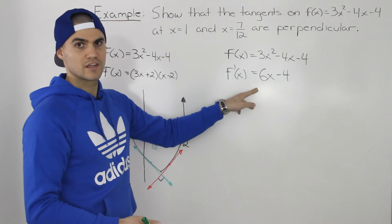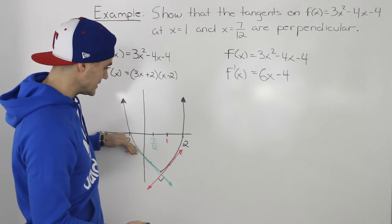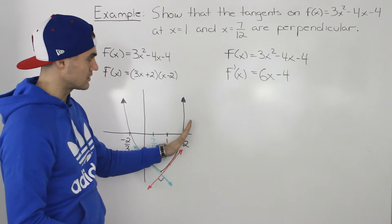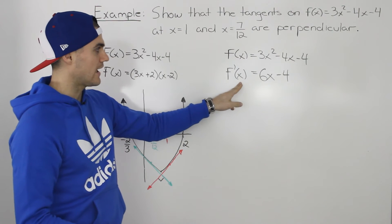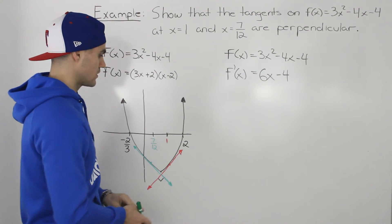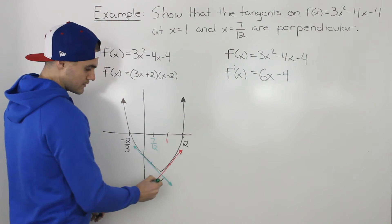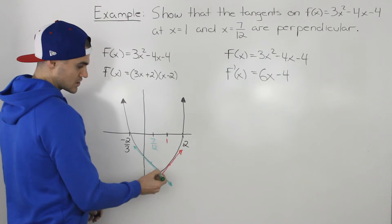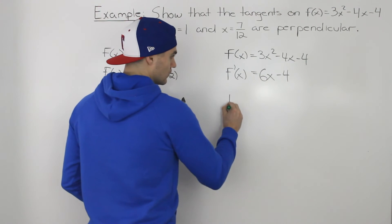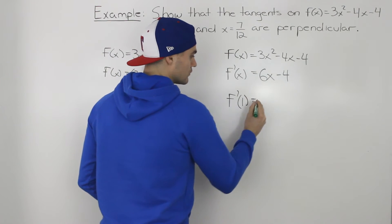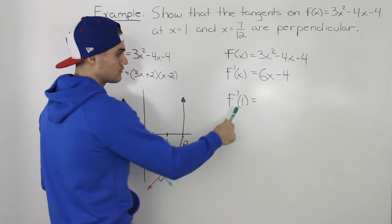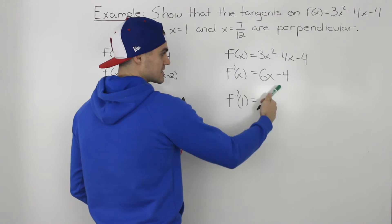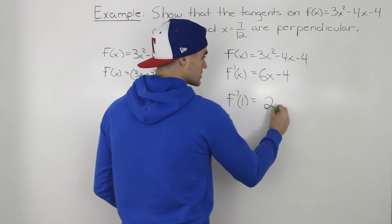The derivative gives us the slope of any tangent on this function at any x value. So if we want to find the slope of this red tangent at an x value of 1, we would just find the value of the derivative at an x value of 1. If we plug in 1 into the derivative, 6 times 1 is 6, minus 4 is 2.